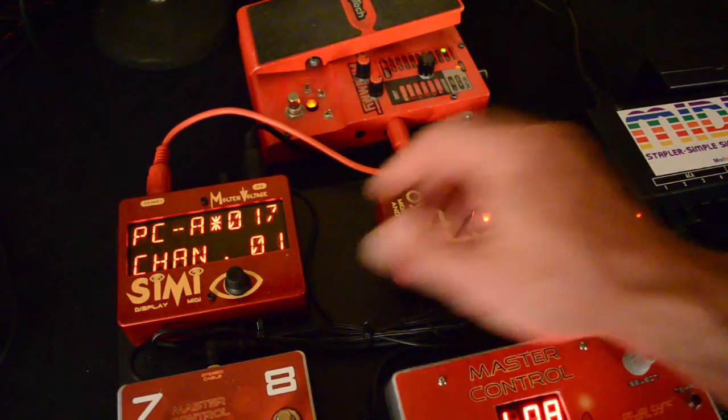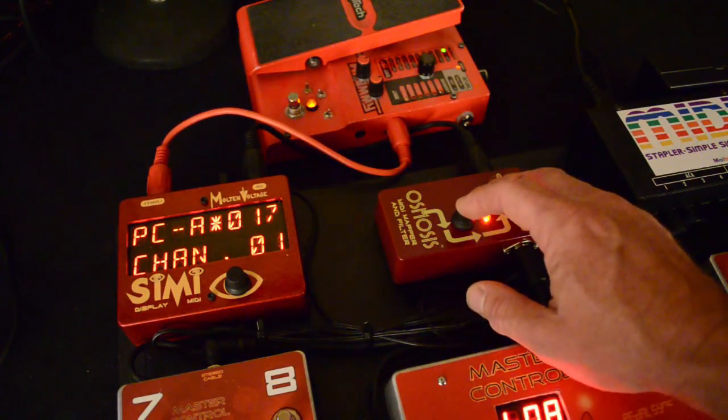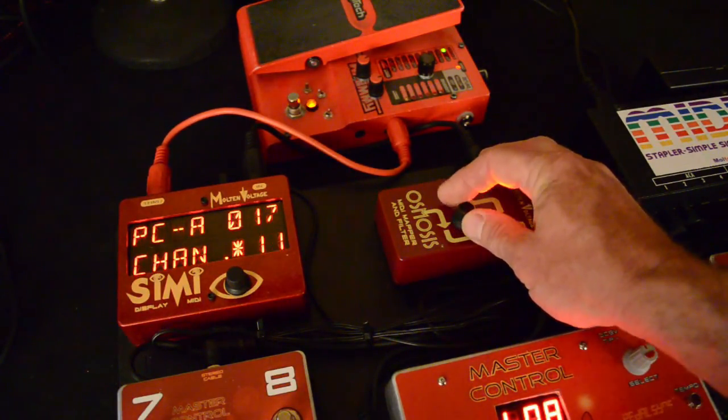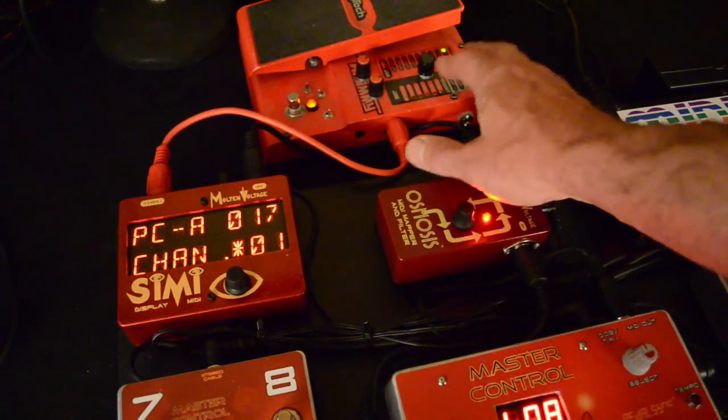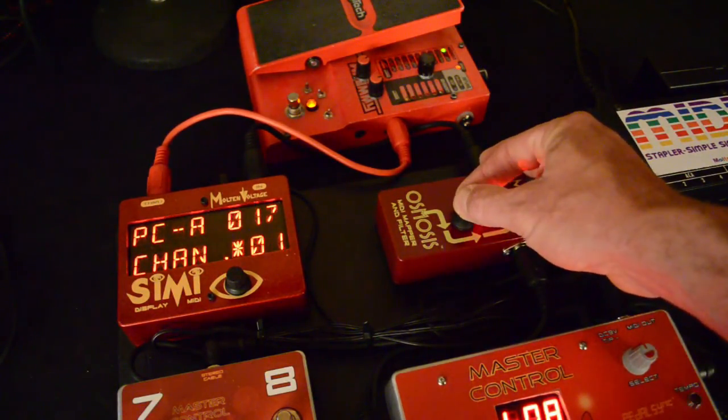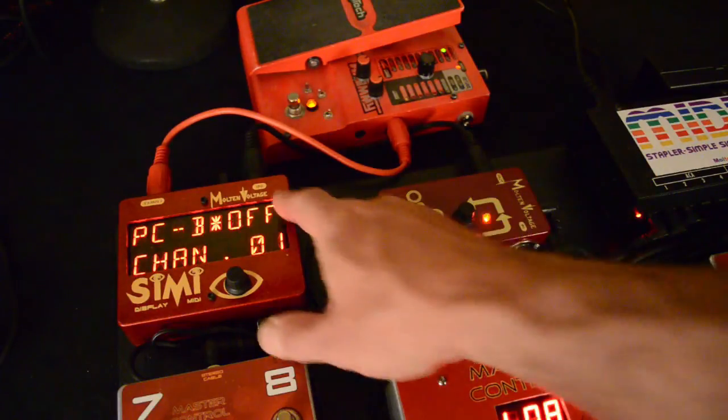Let's just say we want Program Change 17, and then we can select what MIDI channel it happens on. Now, I have the Whammy here set to Channel 1, so that's what we're going to keep it on.